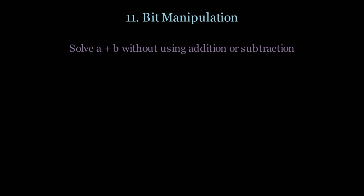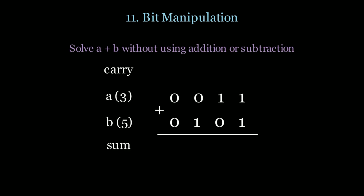Now let's take a look at another example: solve a plus b without using addition or subtraction. Starting with the least significant bits — 1 plus 1 is 10 in binary — so we put 0 for the sum and carry a 1.